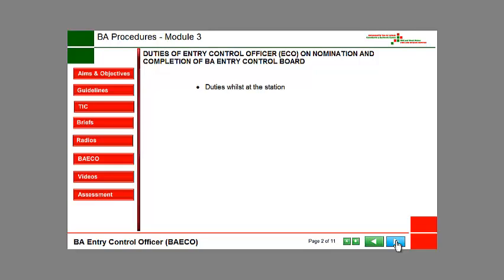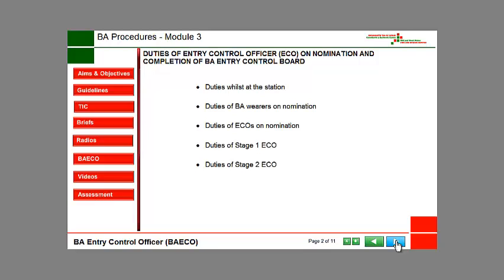Duties whilst at the station cover: duties of BA wearers on nomination, duties of Entry Control Officers on nomination, duties of Stage 1 Entry Control Officer, duties of Stage 2 Entry Control Officer, and implementation of Main Control. All of the above refer to Brigade SOP 6.2, Section 4.